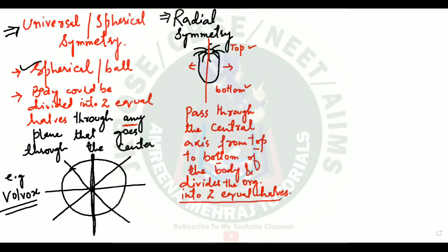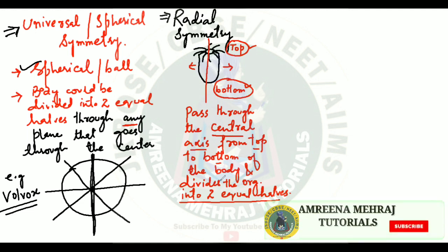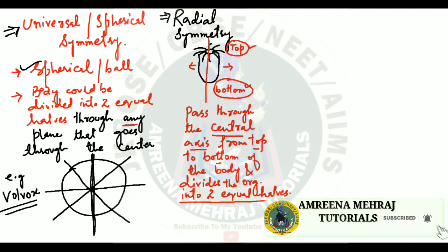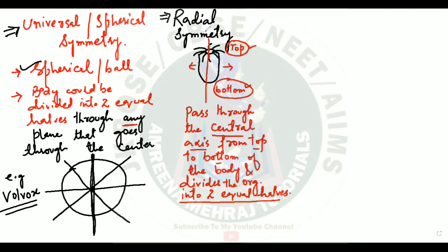If you have a case where you can take any plane but that plane has to pass through the central axis from top to bottom of the body, dividing the organism into two equal halves, then you have radial symmetry. This type of symmetry is shown by Hydra, some jellyfish, sea cucumbers, and starfish.